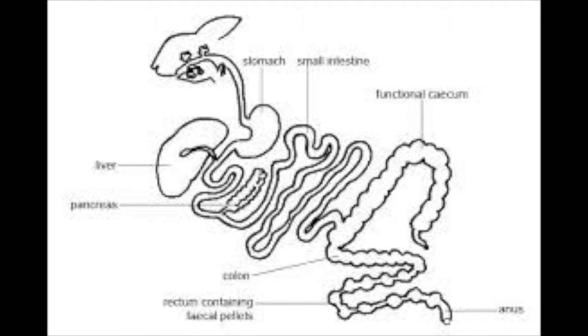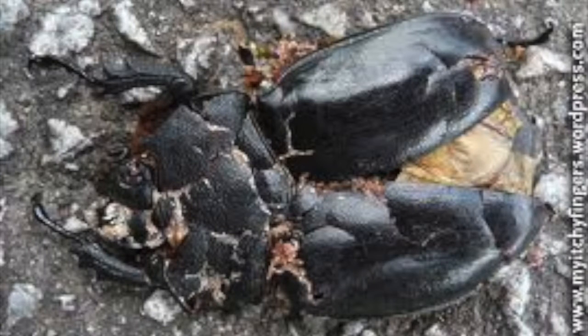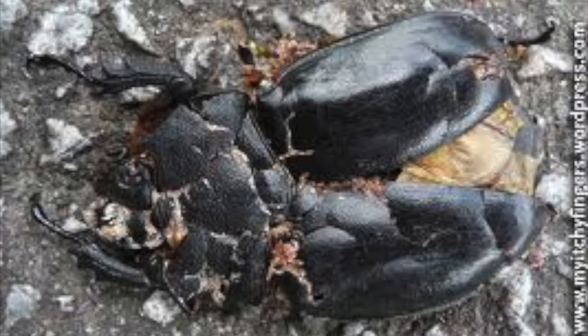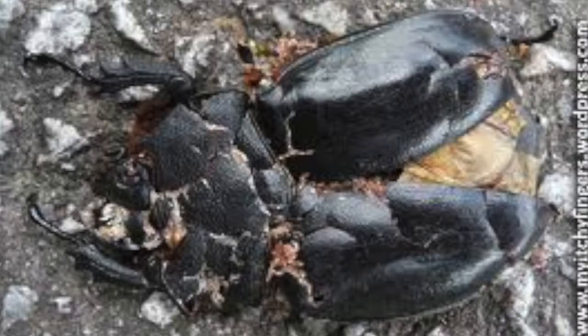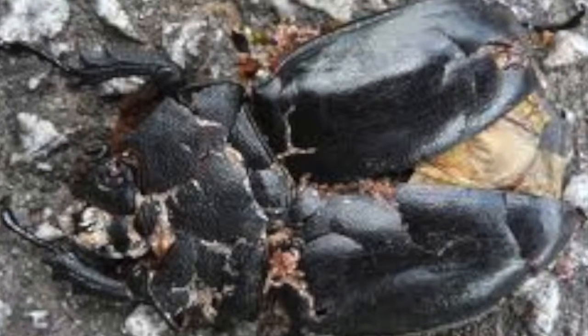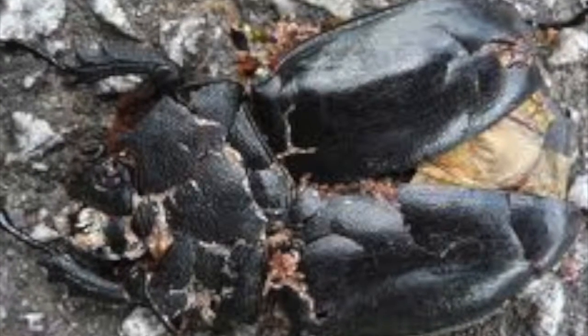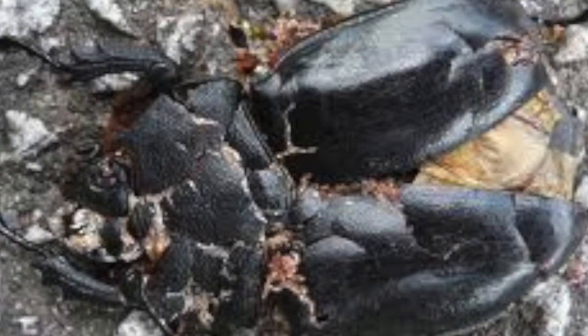The rhino beetle has a through-gut, which means that it eats food through its mouth and excretes through its anus. The rhino beetle has a blood system, but its blood is white due to the fact that it doesn't have any hemoglobin. It has an open circulatory system, which means that the blood moves directly into the body cavity from the heart.